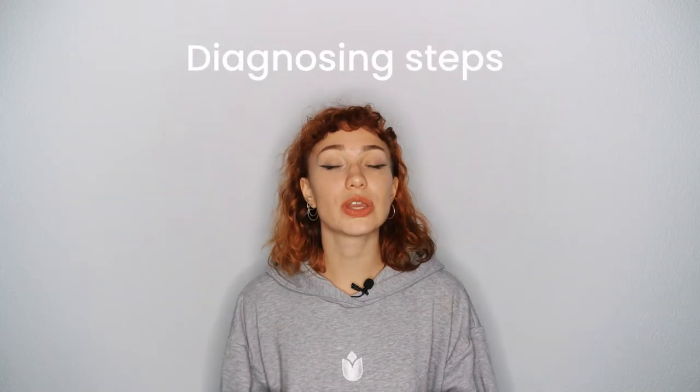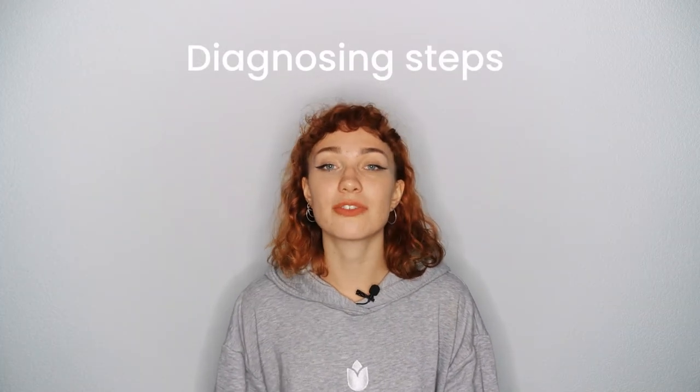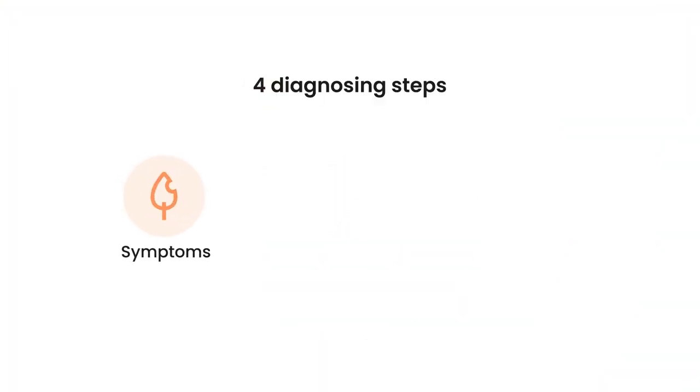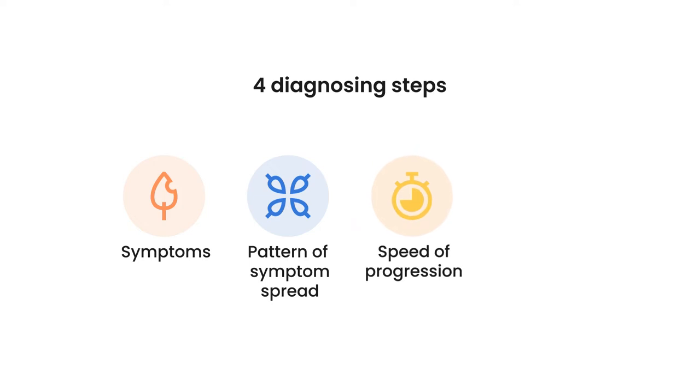Now that you know all the context and basic facts about the plant, follow these steps to diagnose plant growing problems. Here is how I would diagnose my plant. There are four important things to pay attention to: the symptom, the pattern of the symptom spread, the speed of the progression, and the environmental factors.